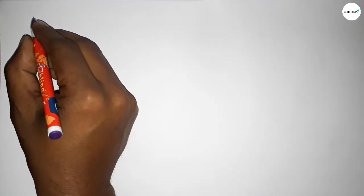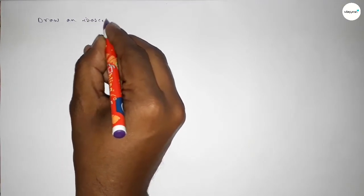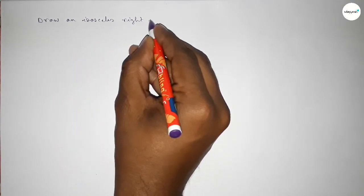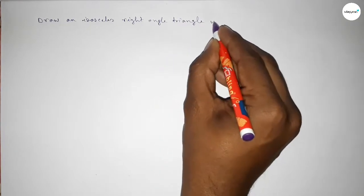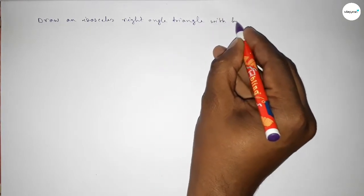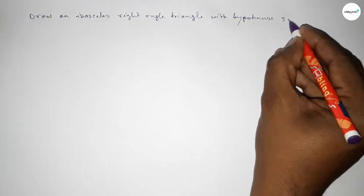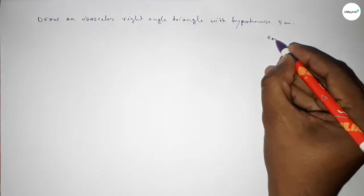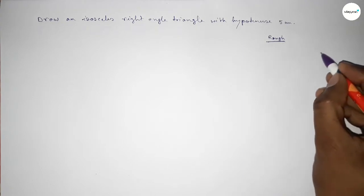Hi everyone, welcome to Essay Share Classes. Today in this video we have to draw an isosceles right angle triangle with given hypotenuse of 5 centimeters. Let's start the video — first we'll roughly discuss the calculation.